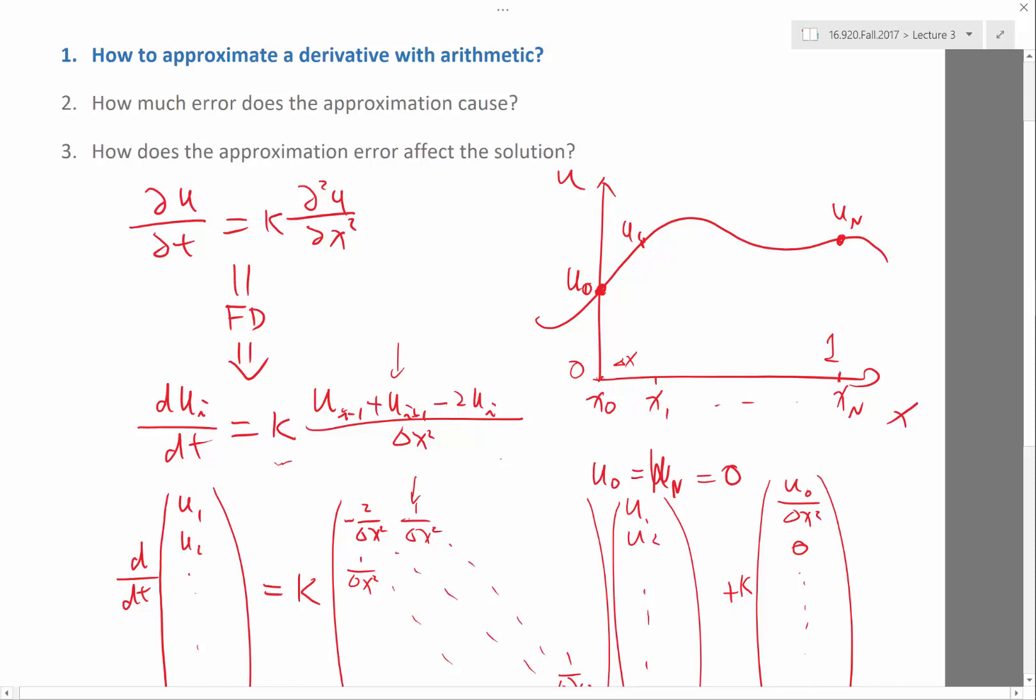The next question is, how much error does this approximation cause? And we know, we see from the screen that if we use a larger n, we'll have less error. The solution is more accurate, but it takes more time. I mean, if we use n equal to 1,000, it takes actually a lot more time if we use ODE45.